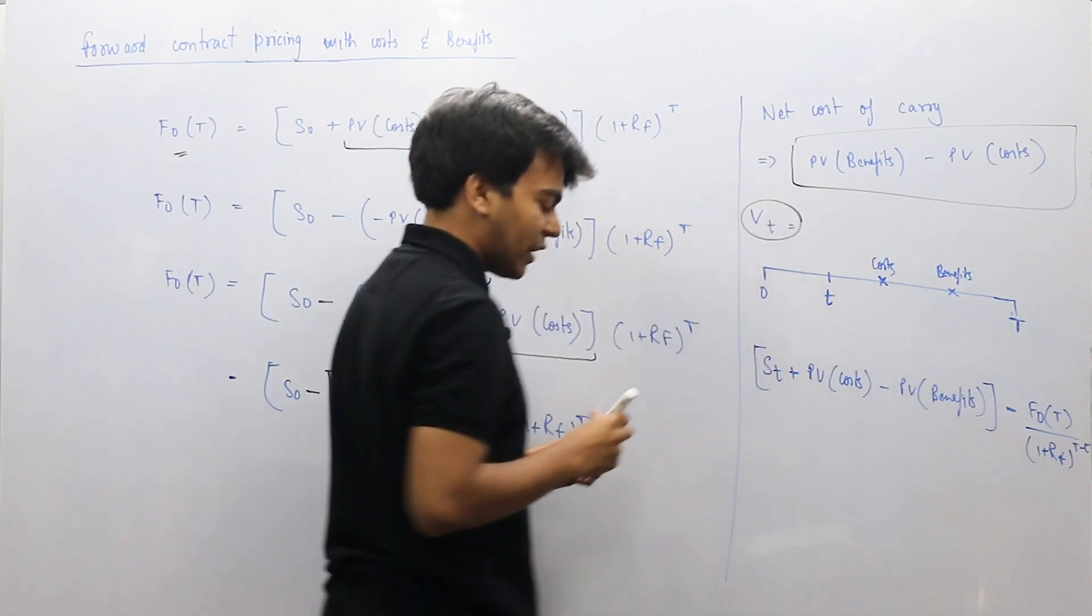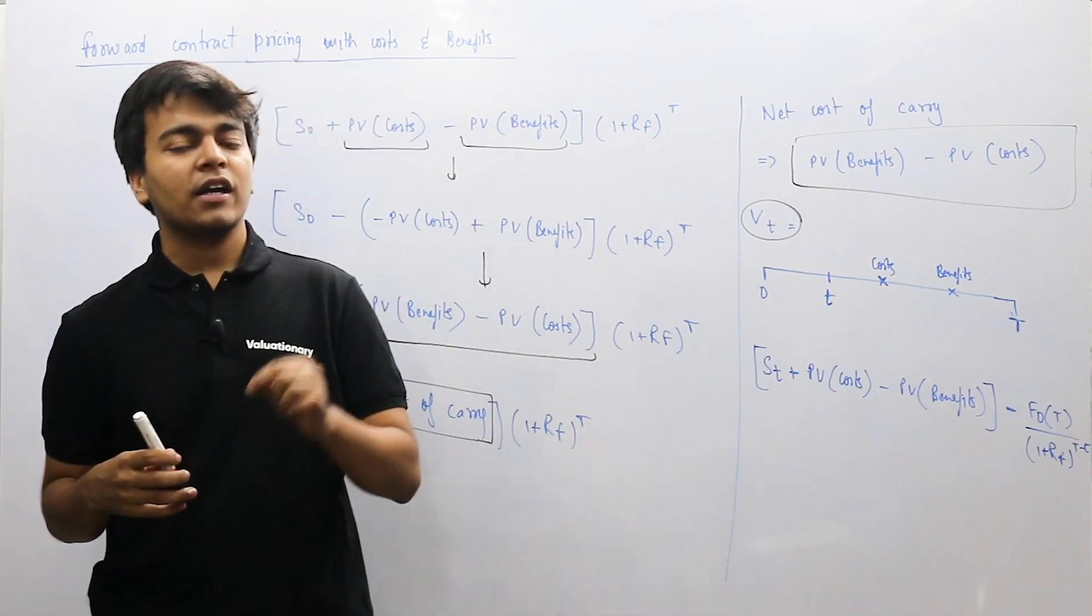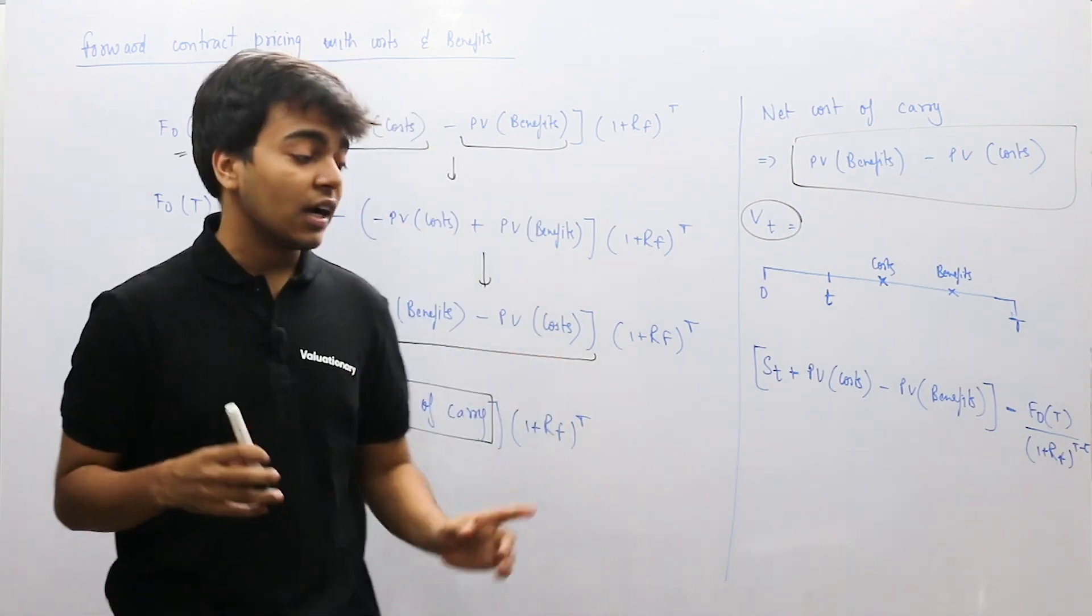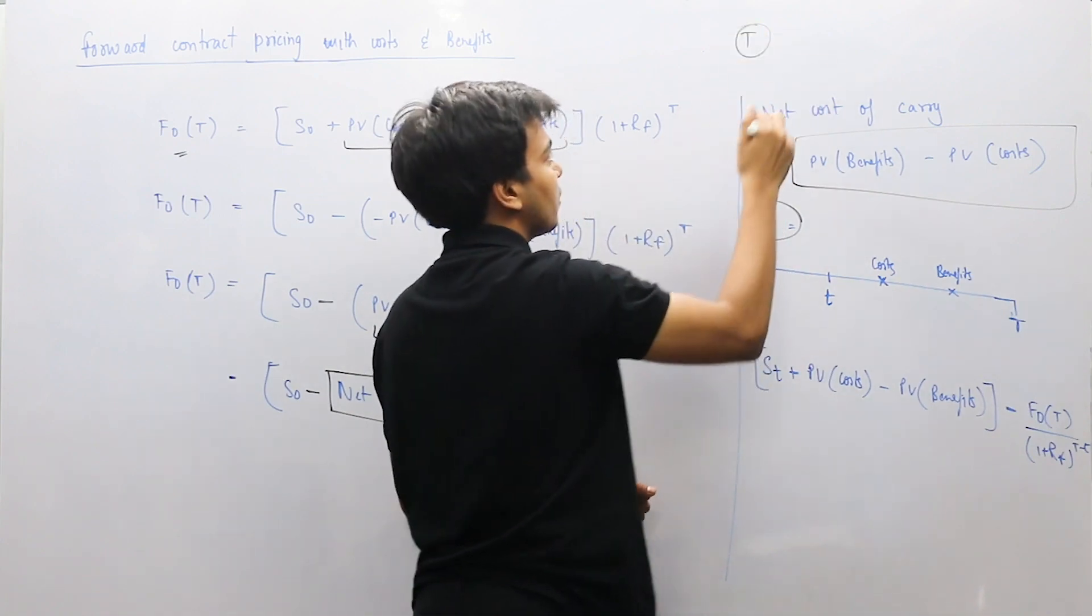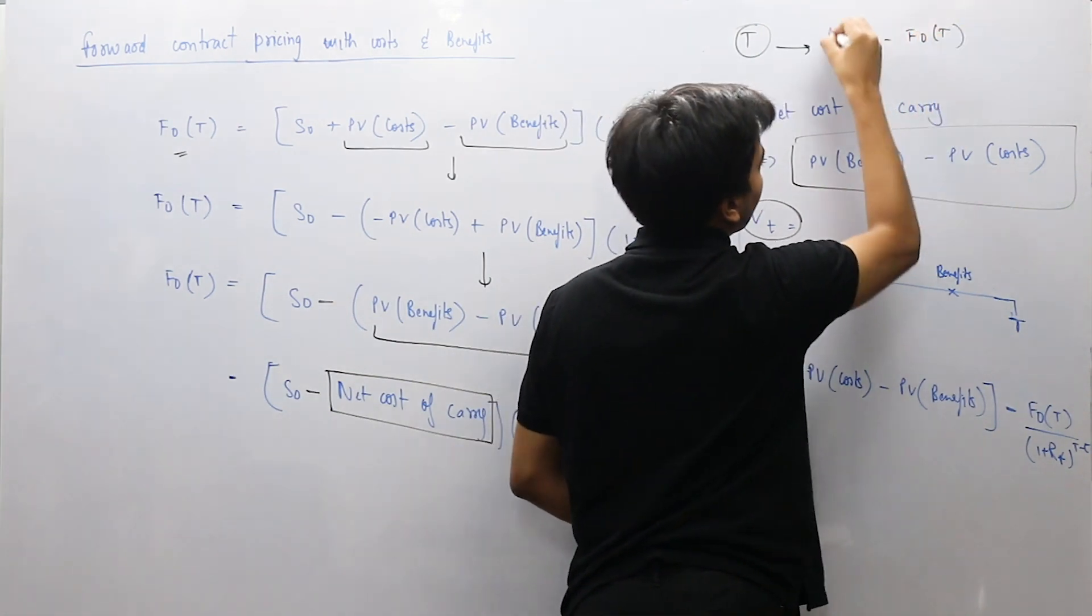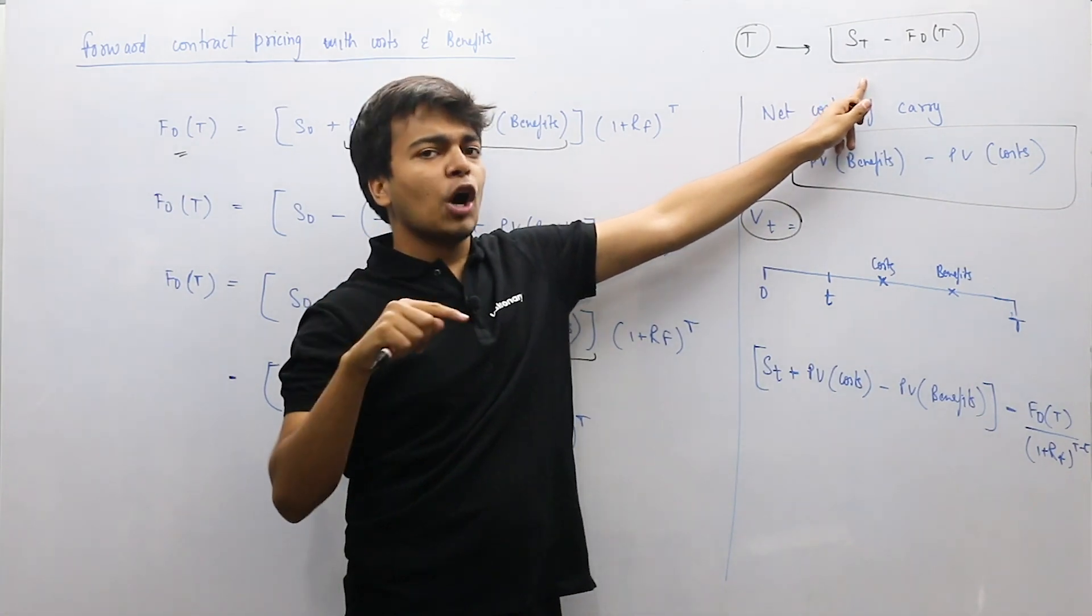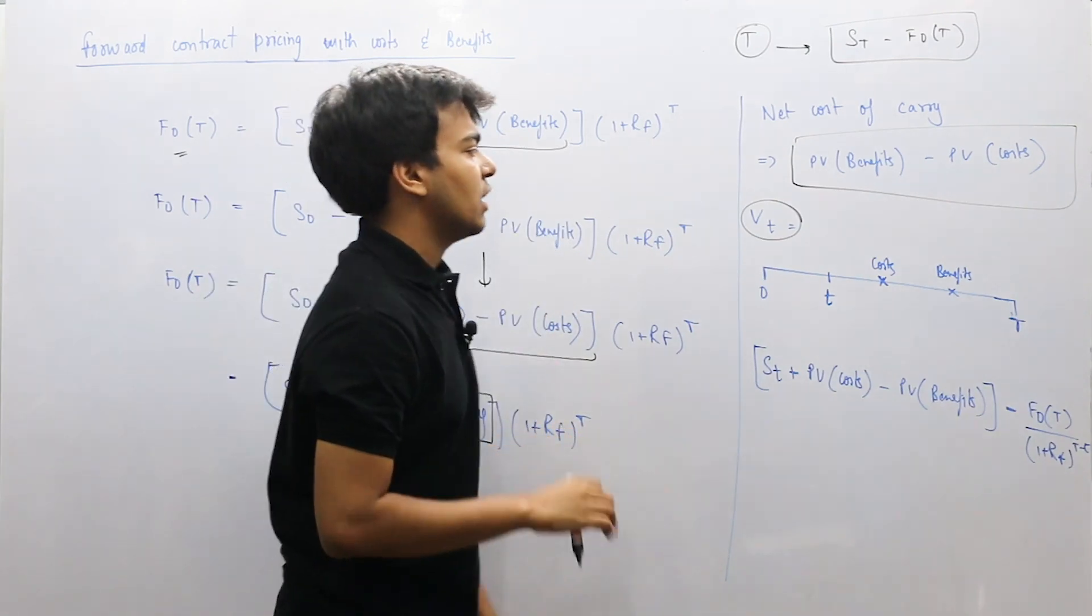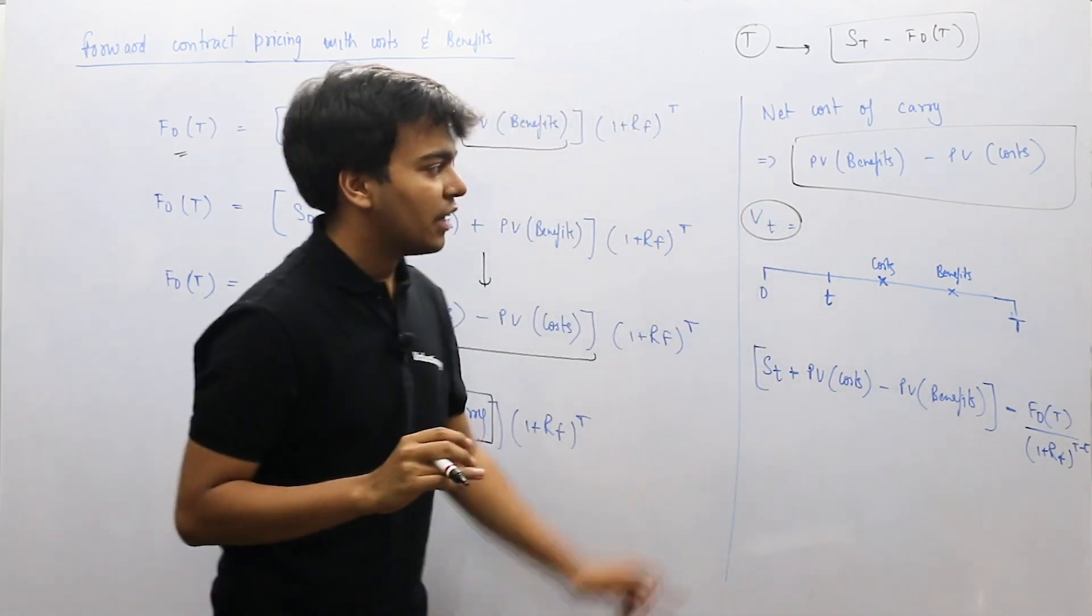Now, talking about value, how do you remove value when we have cost and benefits involved? In time period 0, the value is 0, whether it is long party or short party. In capital time period T, that is contract expiration, the value for the long party is spot price minus forward price.